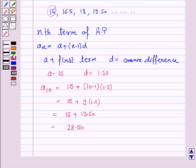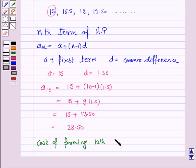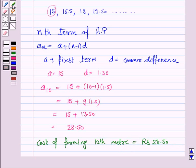So the cost of boring, or cost of forming, the 10th meter is equal to rupees 28.50. You must write this formula.